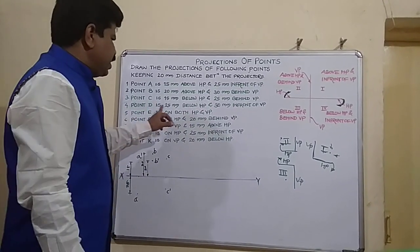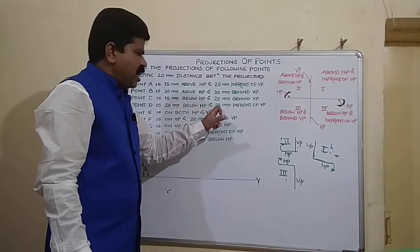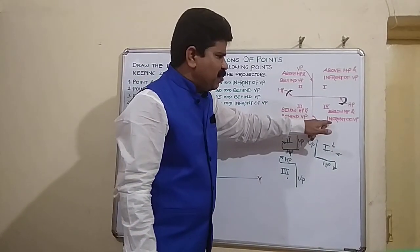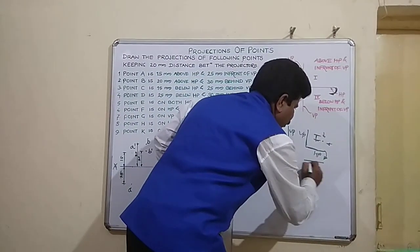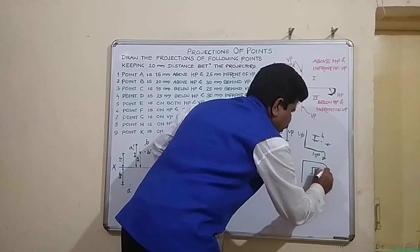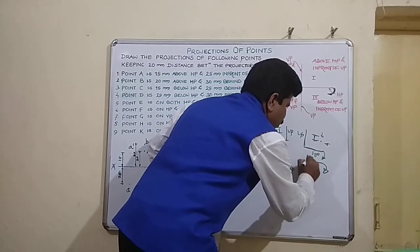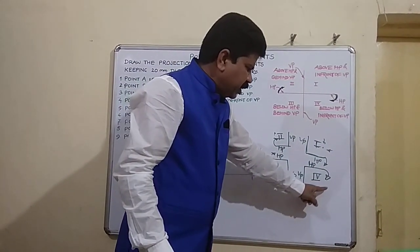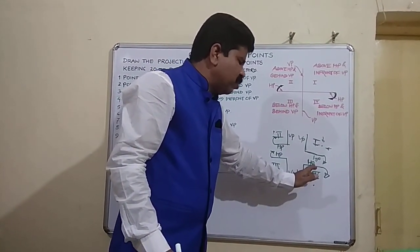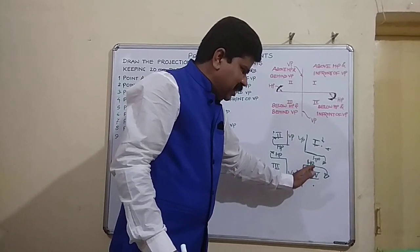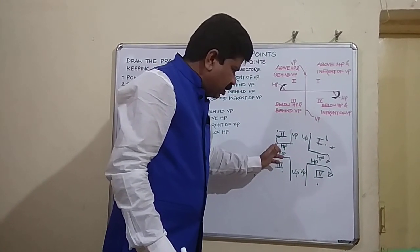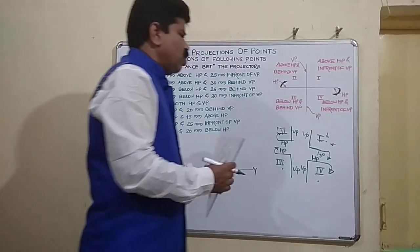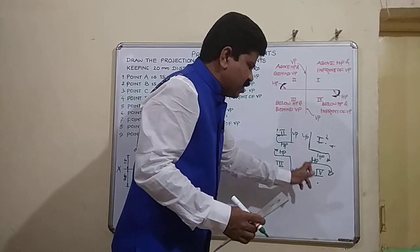Coming to the fourth point: point D is 25 mm below HP and 30 mm in front of VP. Below HP and in front of VP is the fourth quadrant. When HP is rotated clockwise, overlapping of the plane takes place for both HP and VP — the same thing happens in the second quadrant. So the quadrant gets closed in the second as well as the fourth quadrant.